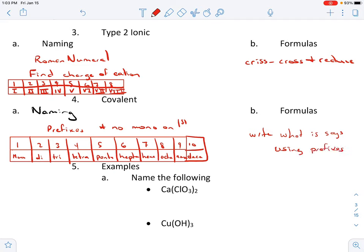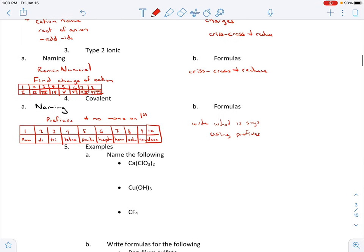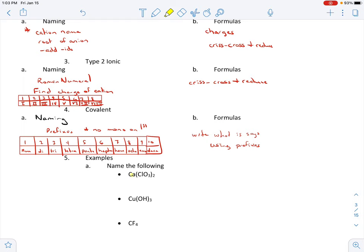So let's see if we can't figure out how to name these. Remember, our first step is always to check that first element. So we're naming, and we always look at our first element. So we look at Ca, we find Ca on our periodic table. There it is. It's type one. So we know that this one is type one, so we name using our type one rules. So we have the name of the cation, calcium. Now this last thing, ClO3, is a polyatomic ion found at the top of your periodic table. And ClO3 is chlorate. So we just say calcium chlorate.